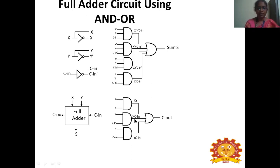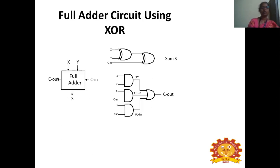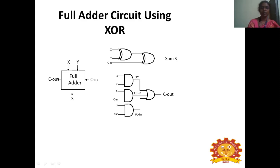For carry output using AND-OR: XY, XCIN, and YCIN — all product terms ORed together — give COUT. The same full adder can also be realized using XOR logic. X XOR Y XOR CIN gives sum, and XY + XCIN + YCIN gives COUT. Using XOR instead of AND-OR logic will not produce a different output; it gives the same result.